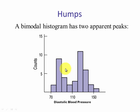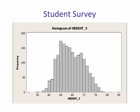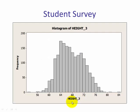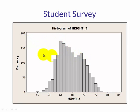This histogram is clearly bimodal. Going to the student survey data for the variable height — if we look closely, this is bimodal: here's a peak, and here's a peak. This makes sense because this is men and women grouped together. Men on average are taller, so their peak is more to the right than female heights. We can also see that there are more women taking the survey than men.